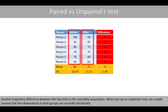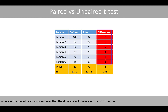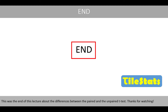Another important difference between the two tests is the normality assumption. When you use an unpaired t-test, we usually assume that the observations in both groups are normally distributed, whereas the paired t-test only assumes that the differences follow a normal distribution. This was the end of this lecture about the differences between the paired and the unpaired t-test. Thanks for watching.